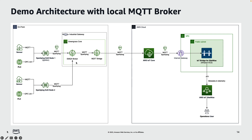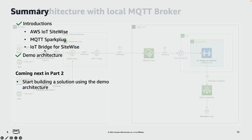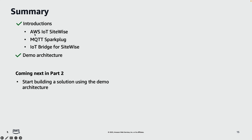So just to summarize what we've seen so far: in this video, we talked about AWS IoT SiteWise, MQTT Sparkplug, and IoT Bridge for SiteWise, and we also went through a demo architecture. In the next video, we'll start building a solution using this architecture. Thank you for watching.